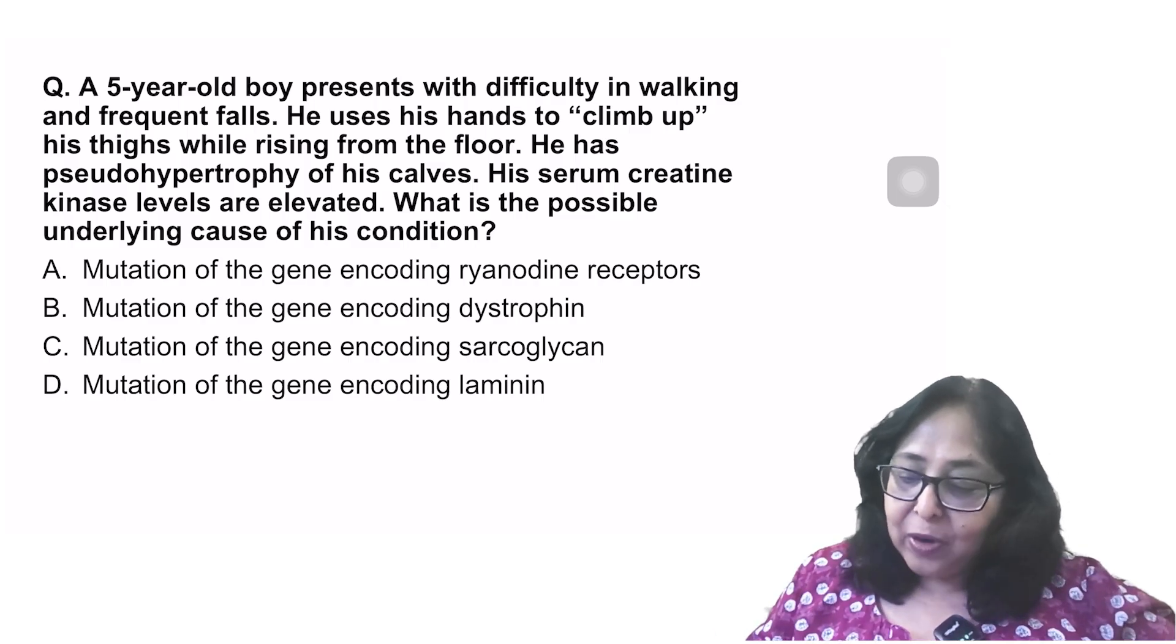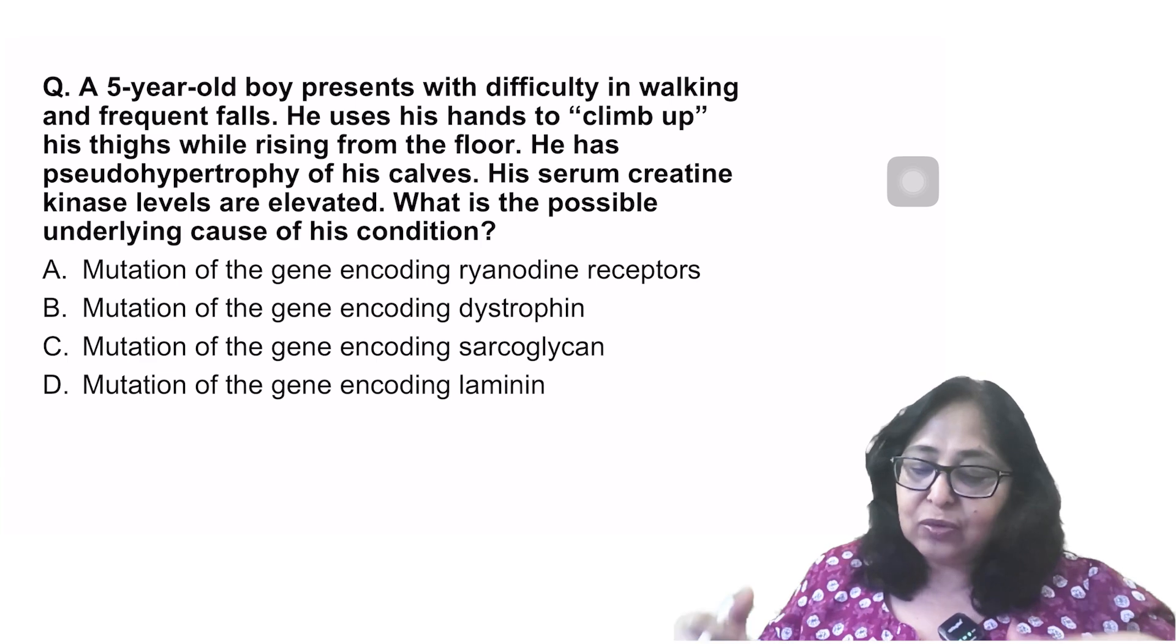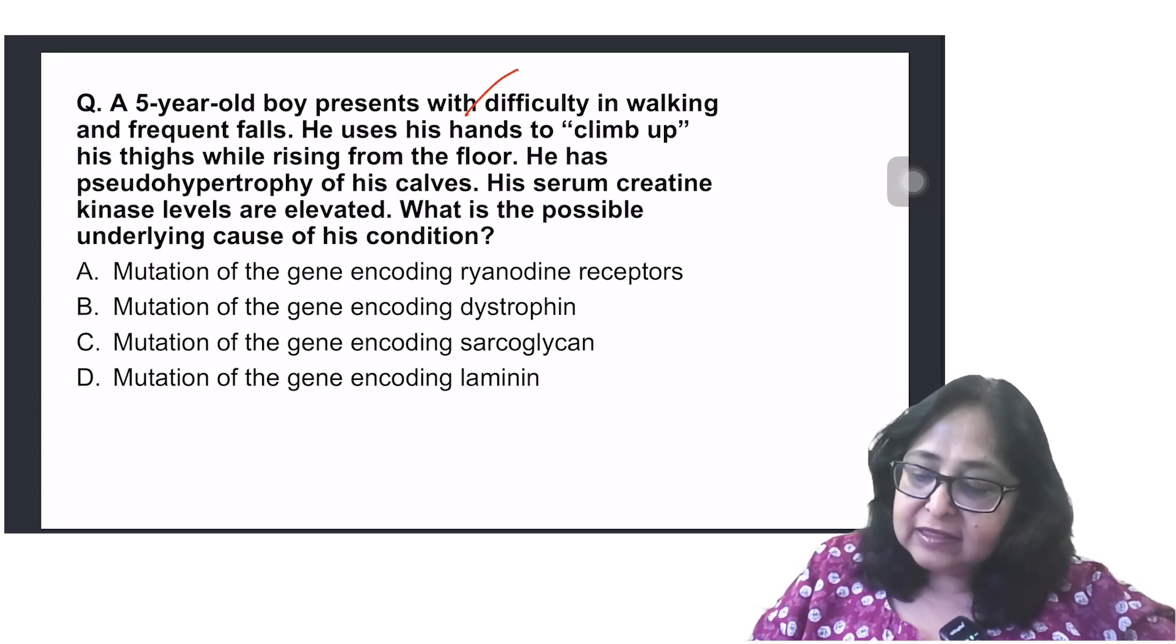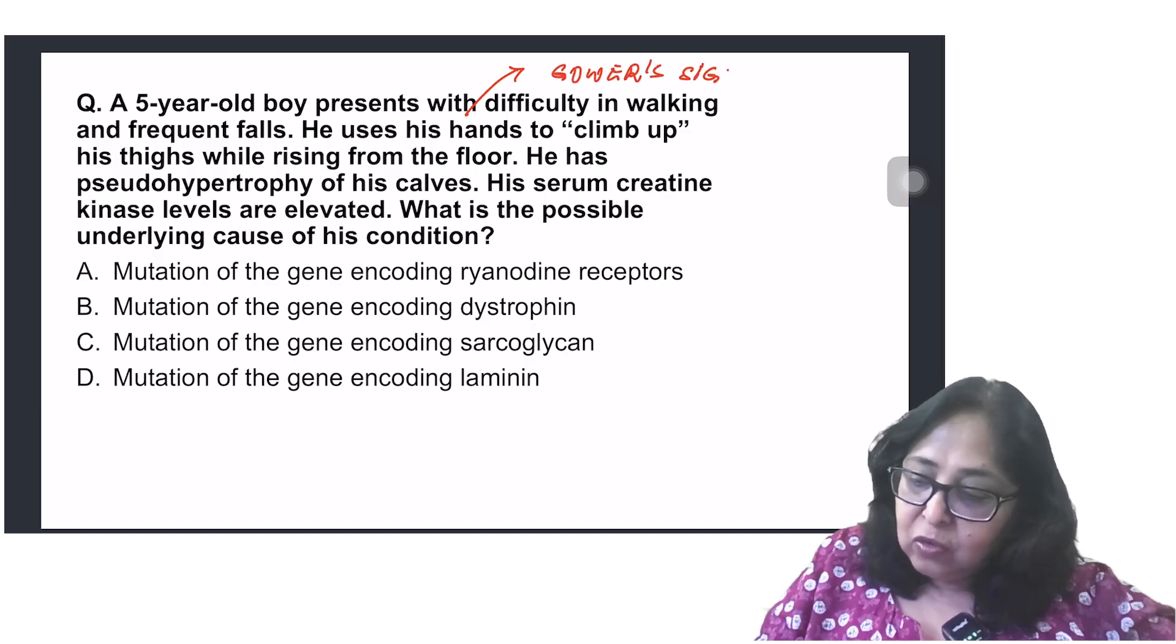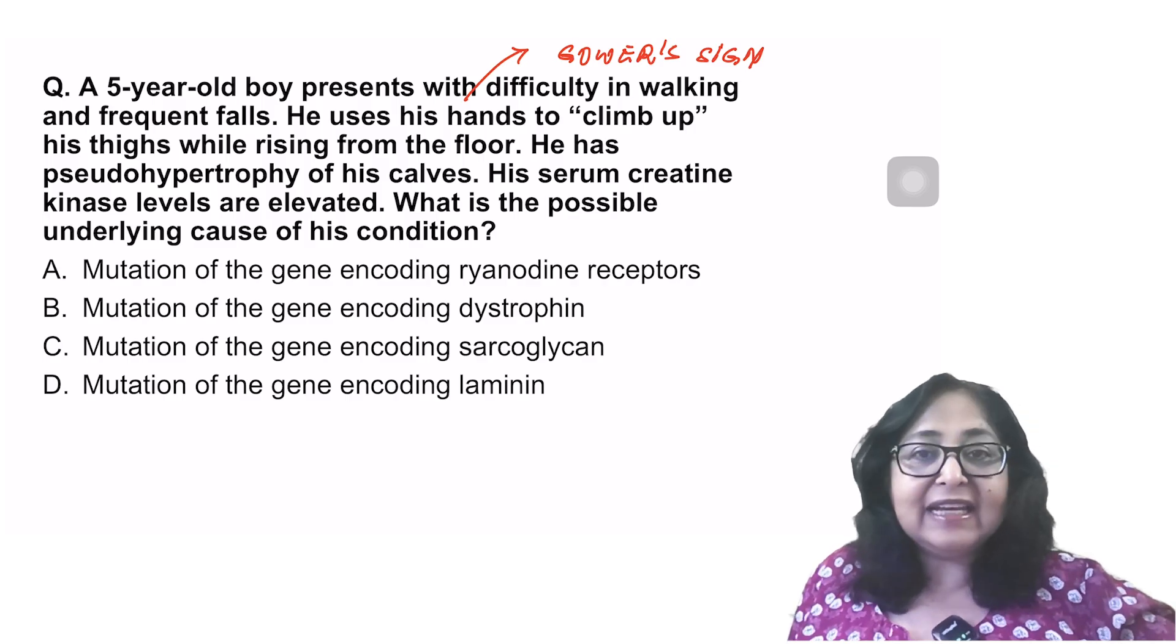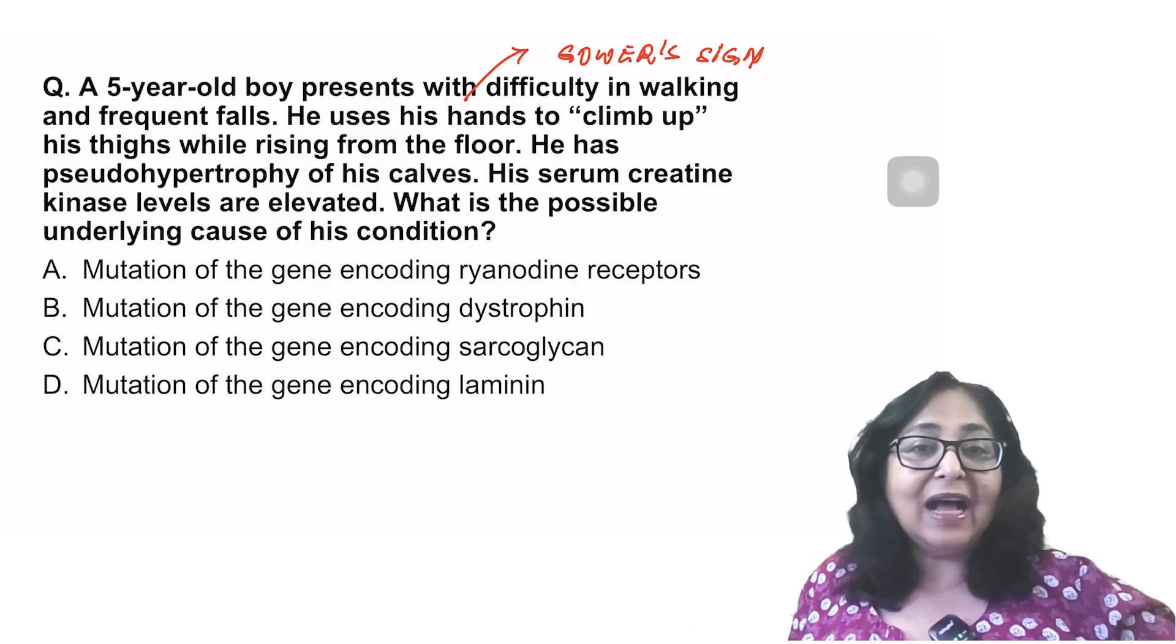A five-year-old boy presents with difficulty in walking, infrequent falls. He uses his hands to climb his thighs when rising from the floor. This is known as the Gower's sign. He also has a pseudo hypertrophy of his calves. His serum creatine kinase levels are elevated. What is the possible underlying mutation?